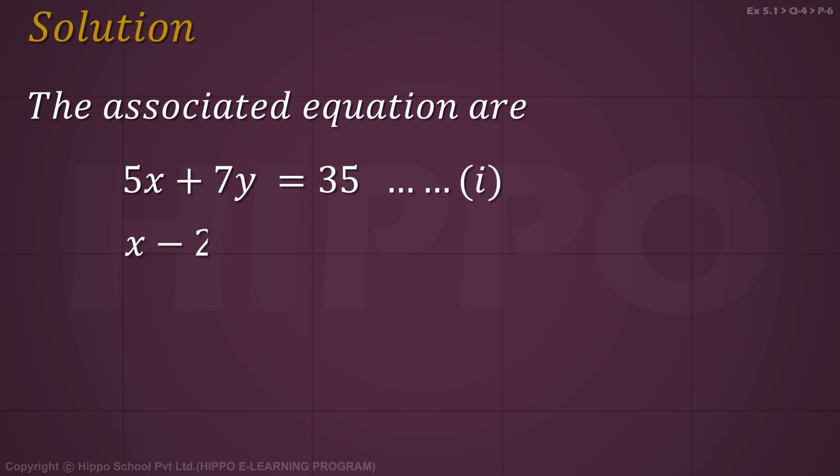Exercise number 5.1, question number 4, part 6. Given 5x plus 7y less than or equal to 35, and x minus 2y less than or equal to 2, with x greater than or equal to 0. The associated equations are 5x plus 7y equals 35, which is equation number 1, and x minus 2y equals 2, which is equation number 2.